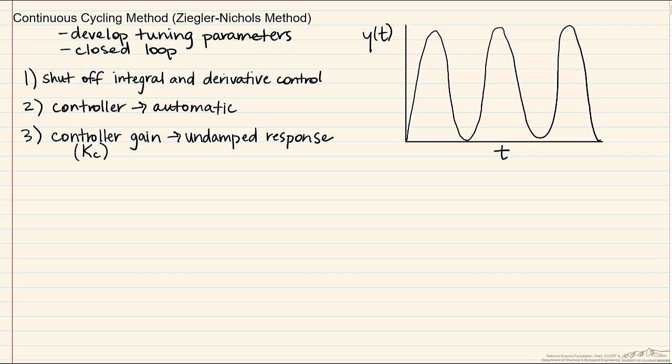However, it is certainly possible that we could see a response where instead of being undamped we see growing oscillations. This is a system which is unstable and obviously undesirable. What this means is that the assessment of the gain you want is too high.